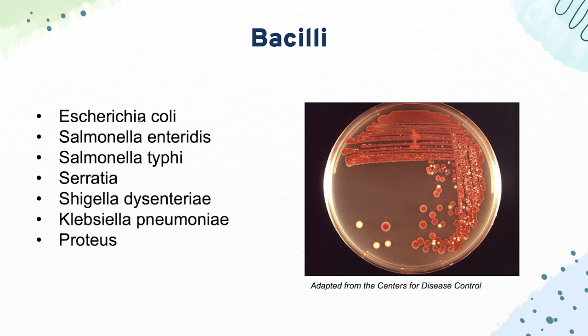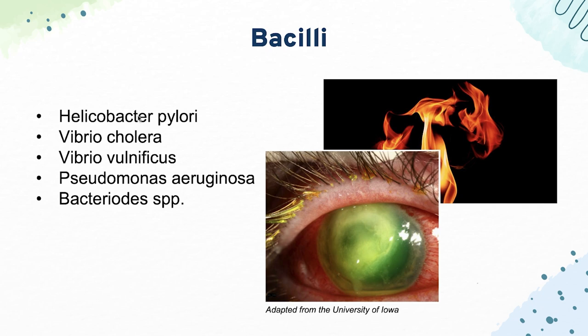Next in our bacilli, we have H. pylori or Helicobacter pylori. This causes GI ulcers and is treated with triple therapy — macrolides, PPIs, and amoxicillin. Next, we have Vibrio cholerae, which in patients in developing countries is typically acquired from contaminated water and causes severe diarrhea.